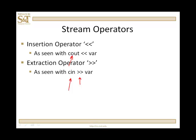cin reads information from the keyboard. cout outputs information to the standard output, which is the screen. And var, of course, is a modifiable memory address. So what you're asking the compiler to do is to stream information from the keyboard into a variable with that cin statement.